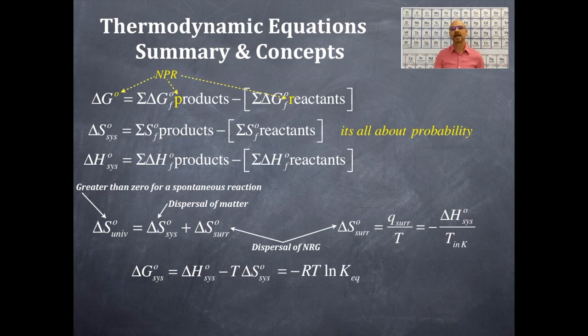This equation can also be written in a couple of other formats. And that is delta G naught for the system, is equal to negative RT ln K_eq. Now, R is the gas constant, T is the temperature in Kelvin, the ln is the natural log, and K_eq is the equilibrium constant.